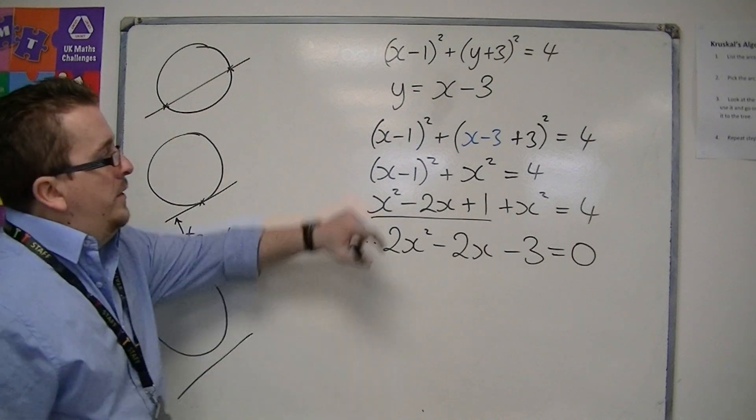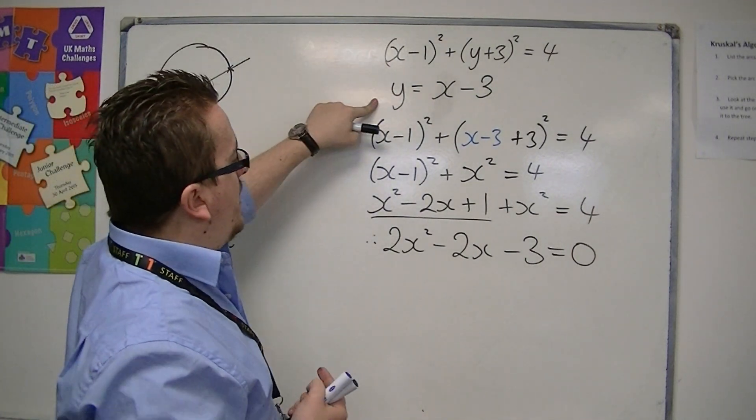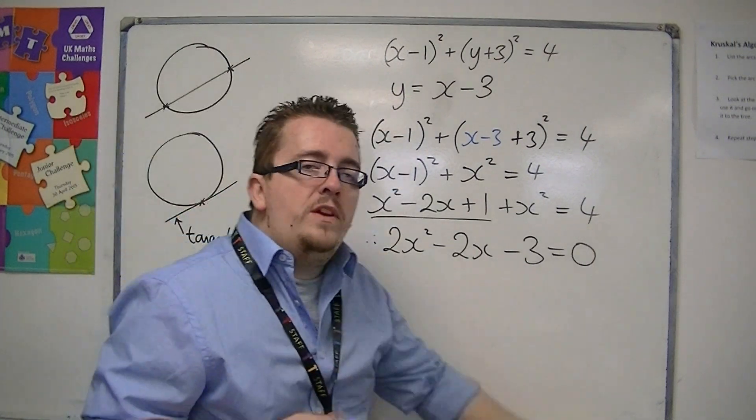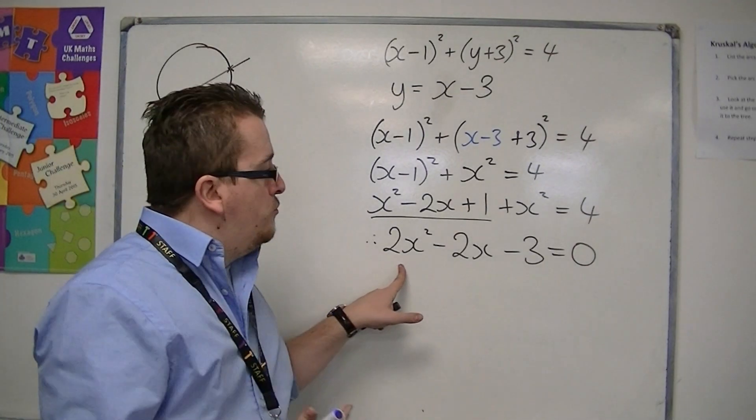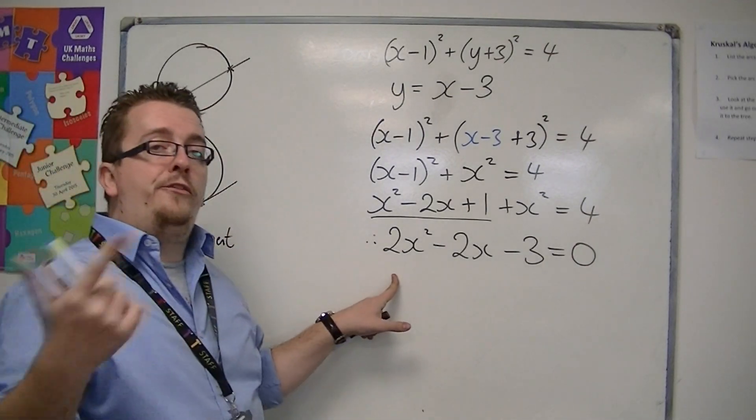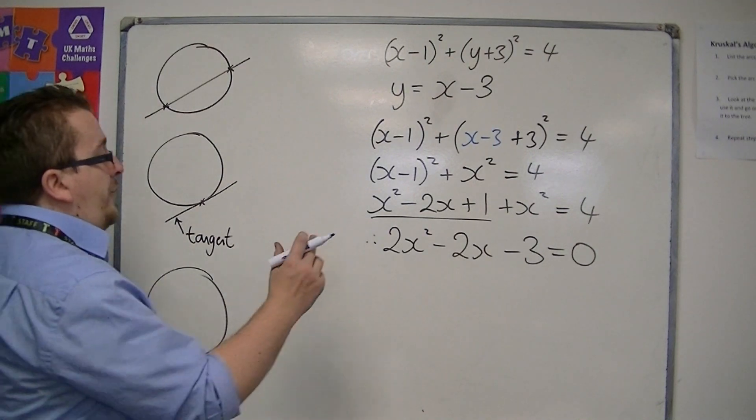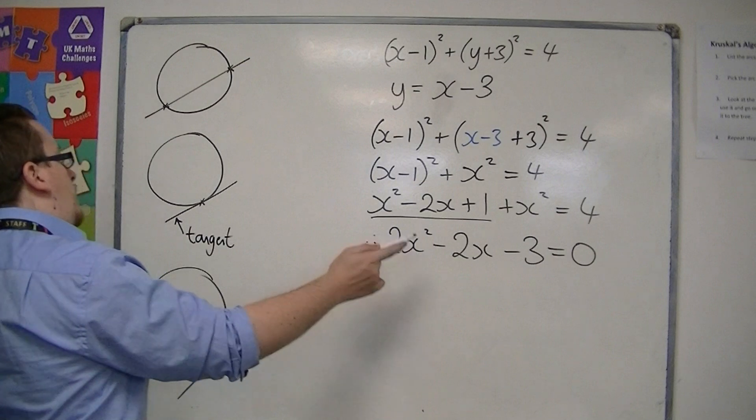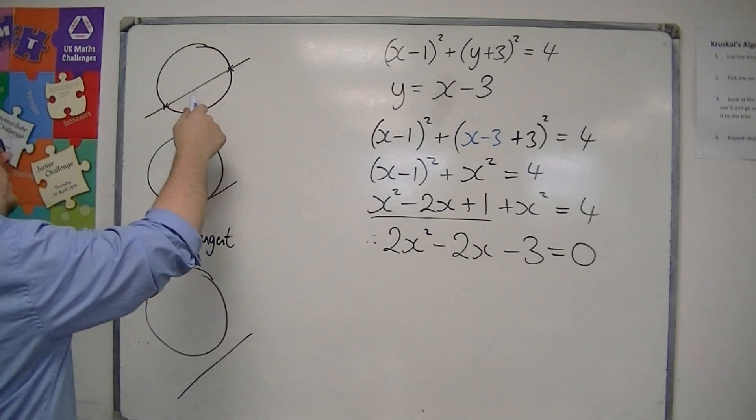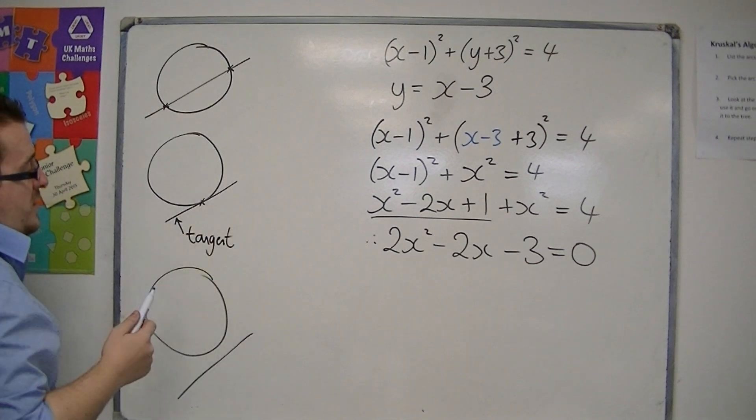So in working with the simultaneous equations of a circle and a straight line, we have ended up with a quadratic. And it is to do with this quadratic, solving it would allow us to find any intersection points. But it is the discriminant of this quadratic that will tell you whether we have two distinct real points of intersection, one point and therefore a tangent to the curve,